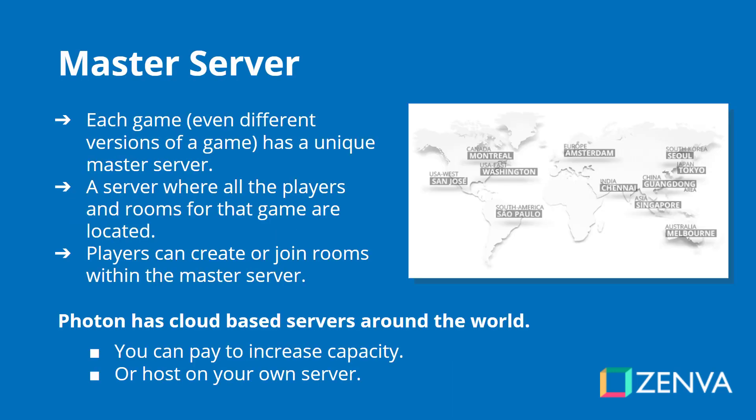The first concept we need to go over is a master server. In Photon, and even in Unity Networking, a master server is basically a collection of rooms. Players can connect to rooms and see a list of all the rooms — it's basically a hub for your game. Each game has its own specific master server, and even different versions of your game can have different master servers. So if you're on version 1, you can't play with people on version 2, and you can only play with people on your game in your specific version.